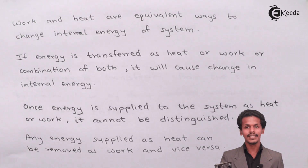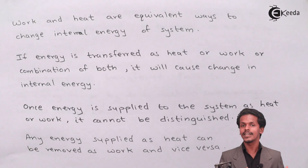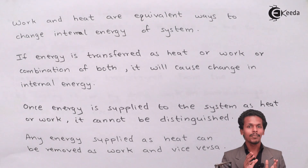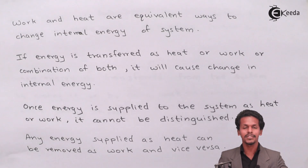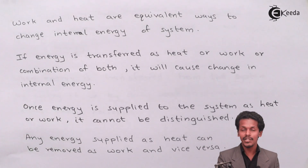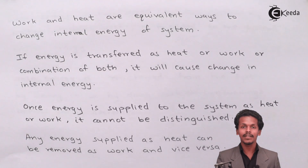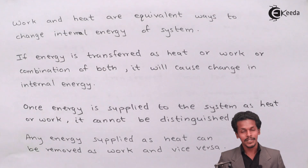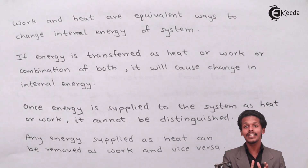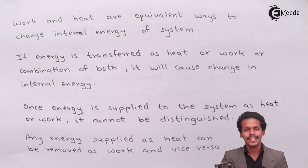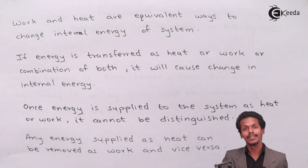This is how we can calculate the change in internal energy. We cannot calculate the specific internal energy of a system because many kinds of forces and energies are associated with it. But for the change, we observe the initial and final states — what energy was provided (heat, work, or any form) — and by taking the difference between those two states, we can calculate the change in internal energy of the system.